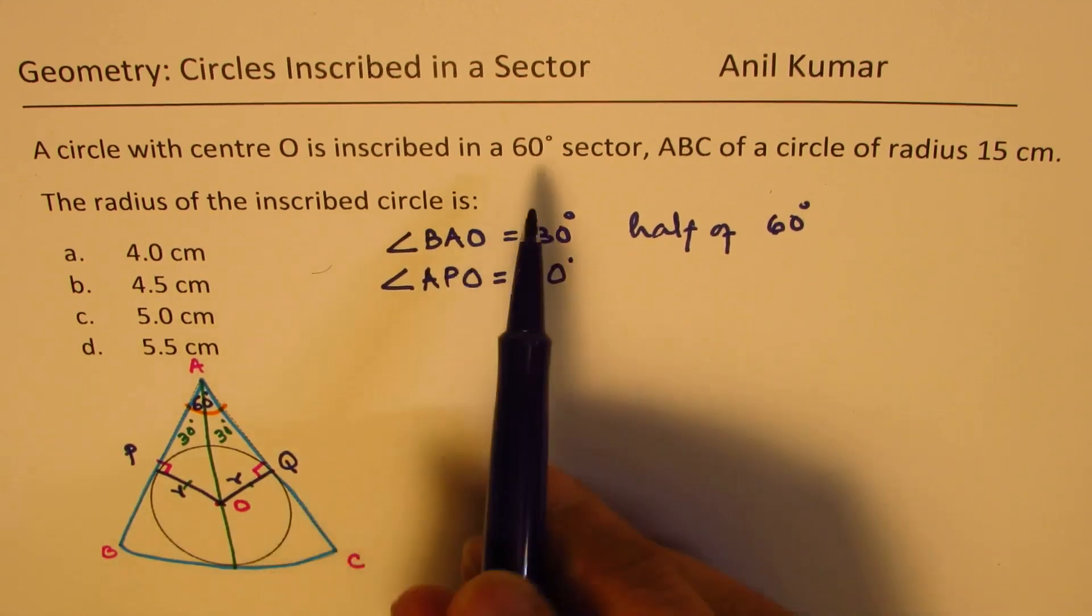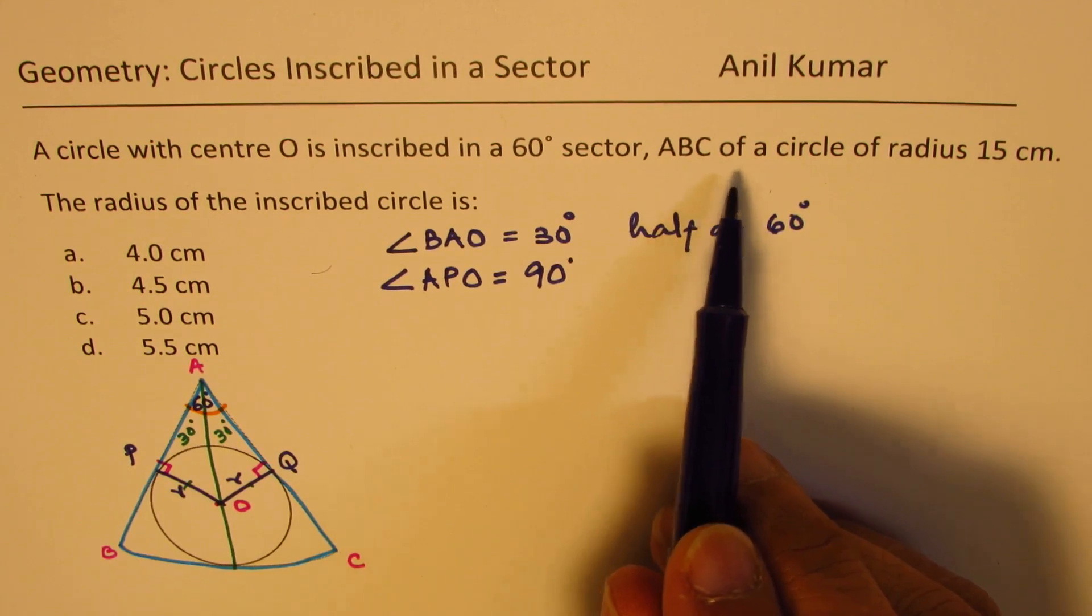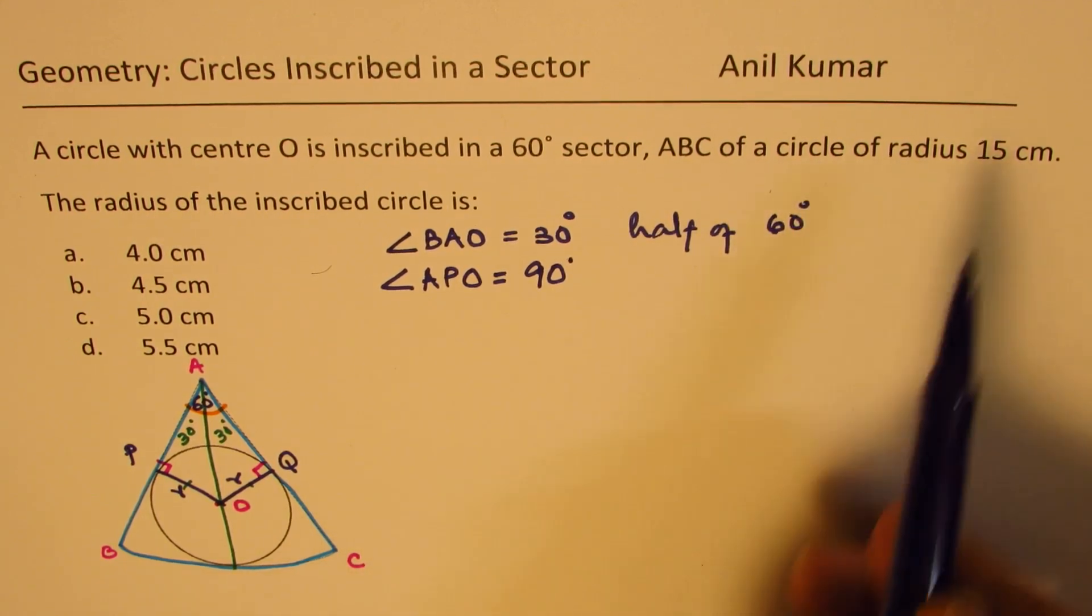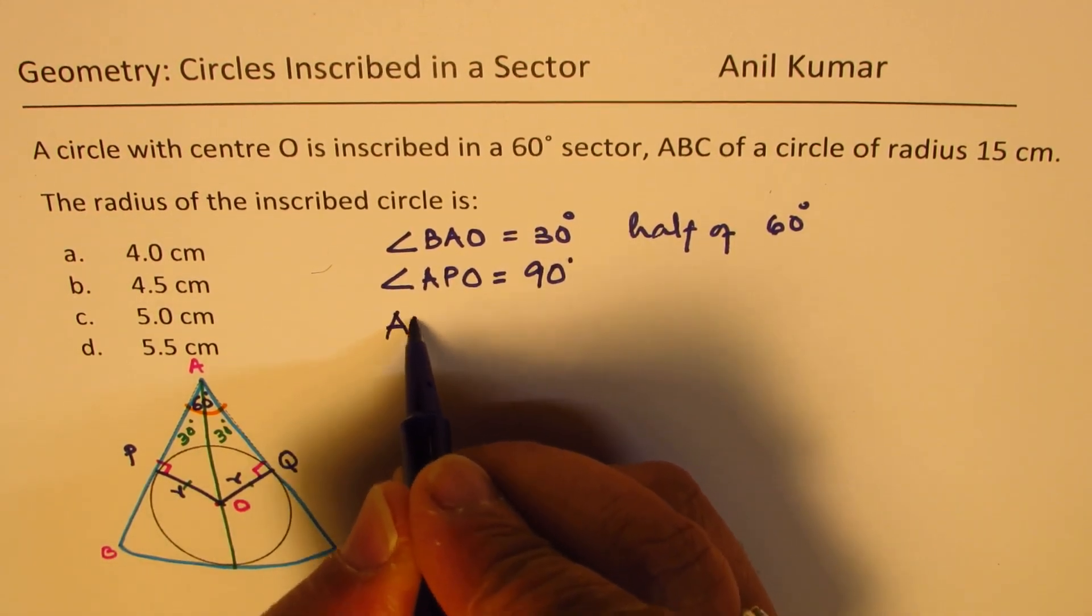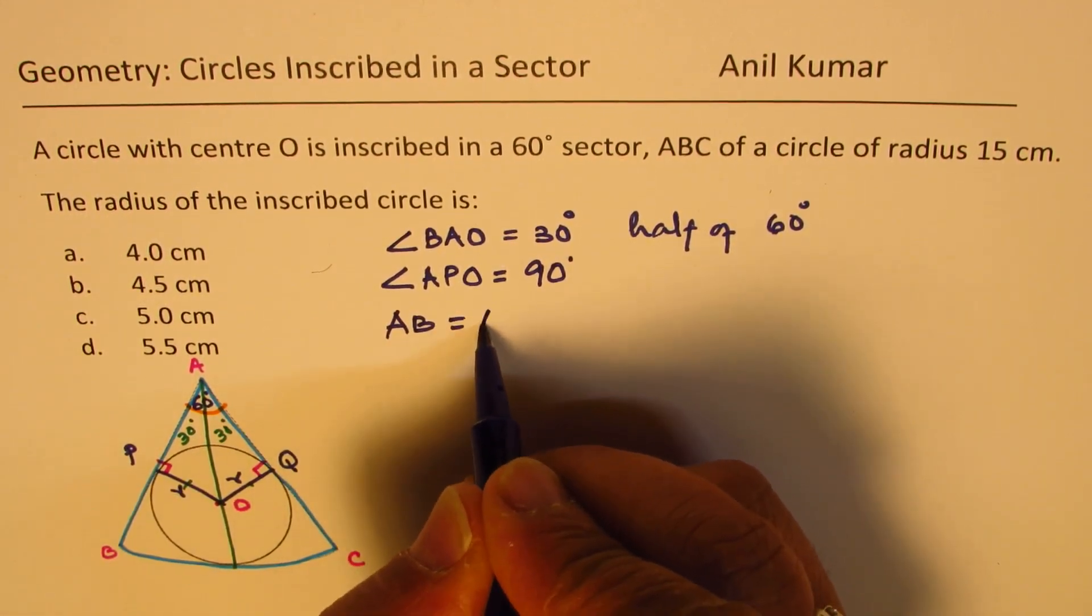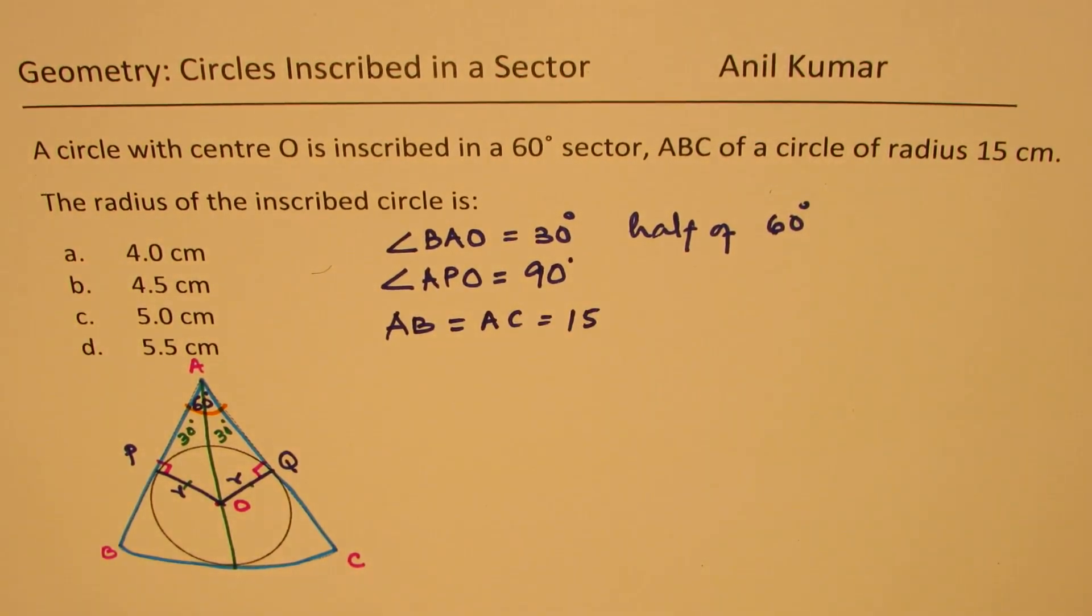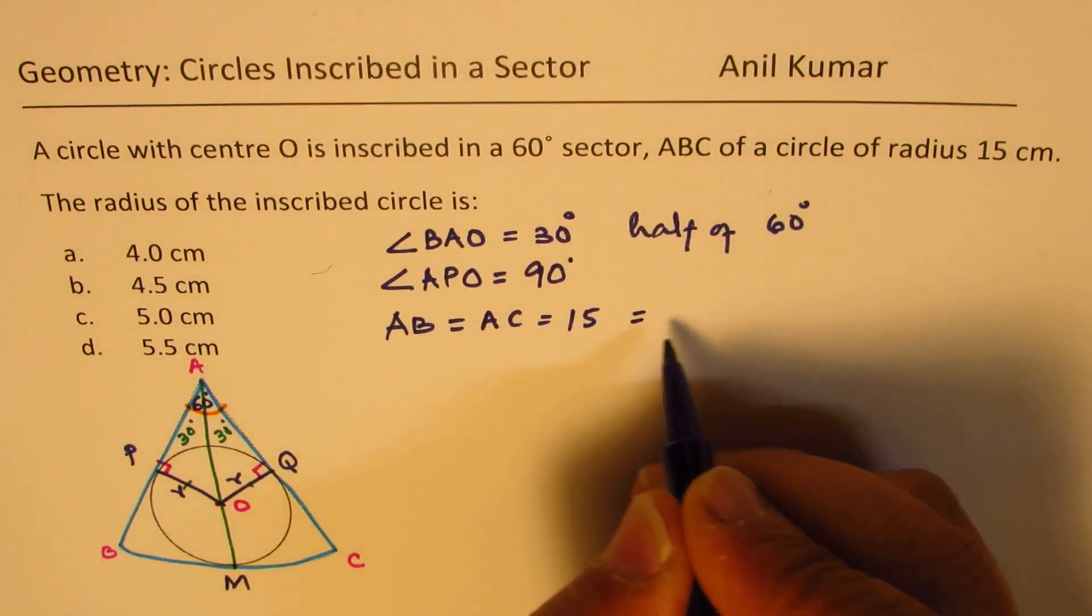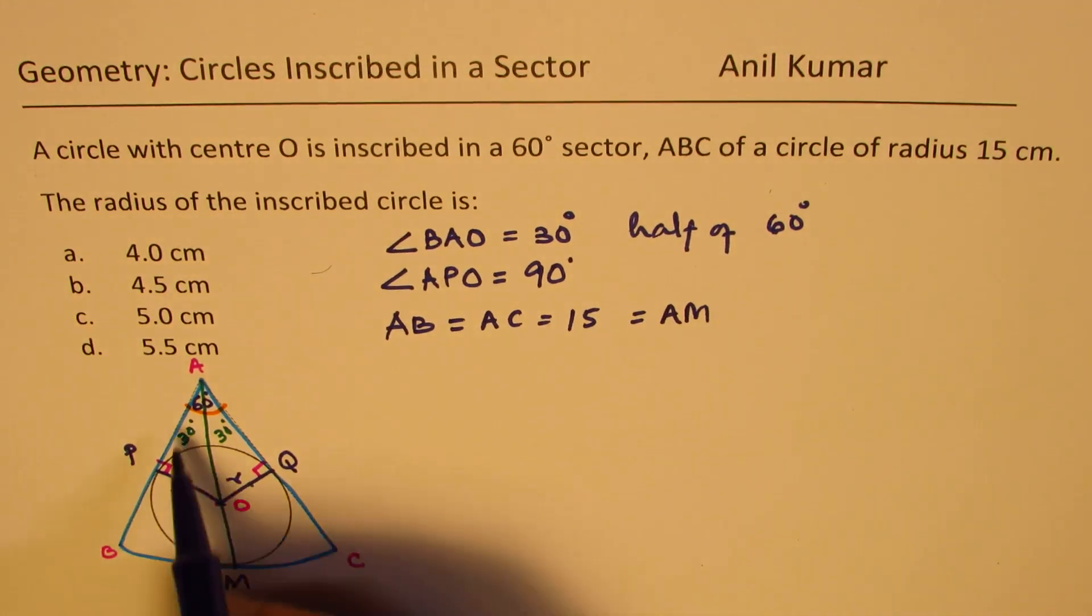Now, we are given that ABC, the sector ABC of a circle with radius 15 centimeter. It really means that the length AB is equal to AC is equals to 15 centimeters. Let me call this point as M. Then AM is also equal to 15, since it is a sector.